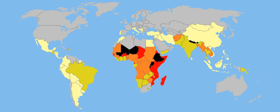In addition to the constitutional prohibition of hazardous child labour, various laws in India such as the Juvenile Justice Care and Protection of Children Act 2000 and the Child Labour Prohibition and Abolition Act 1986 provide a basis in law to identify, prosecute and stop child labour in India.